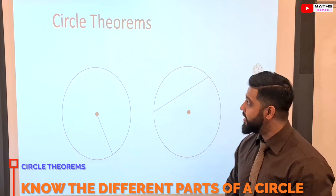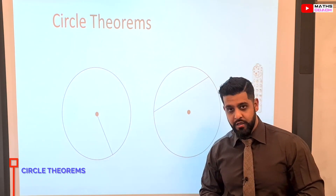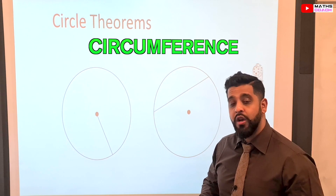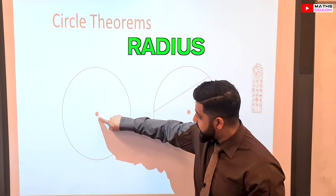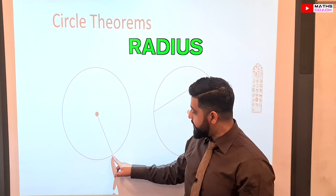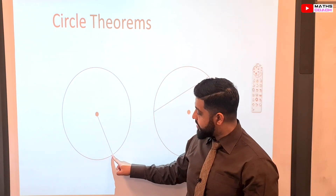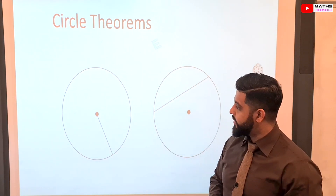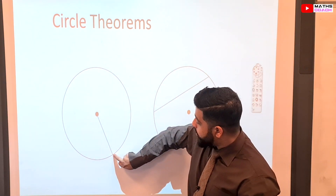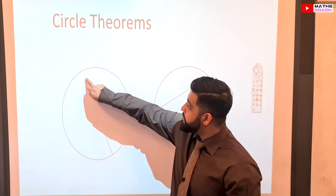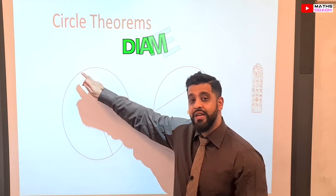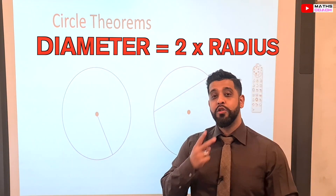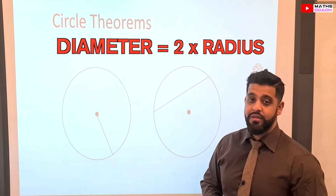Before we begin, I would like to go through some basic parts of a circle with you. This is called the circumference of a circle. This part here is called a radius. The radius touches the circumference and meets the center of the circle, represented by this dot. If a line goes through the center and meets the other side of the circumference, that is known as a diameter. The diameter is twice as long as the radius.